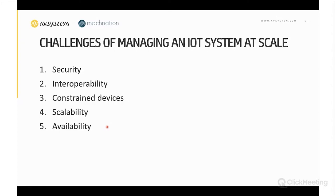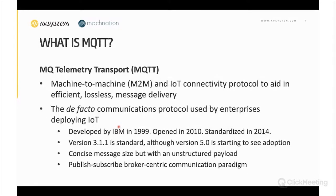Finally, availability. There are two aspects: availability of your device, which can be working fine, and availability of the whole network layer between your device and your IoT management system. You need to monitor the network, ensure proper mobile subscriptions if using cellular, and make sure your data quota has not run out.